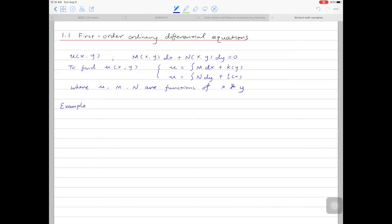Let's look at one example. Assume we have the following relationship: cos(x+y)dx plus 3y squared plus 2y plus cos(x+y), then dy is equal to 0. Comparing what we have here to the general form, cos(x+y) is M or M(x,y). This expression here is N or N(x,y).